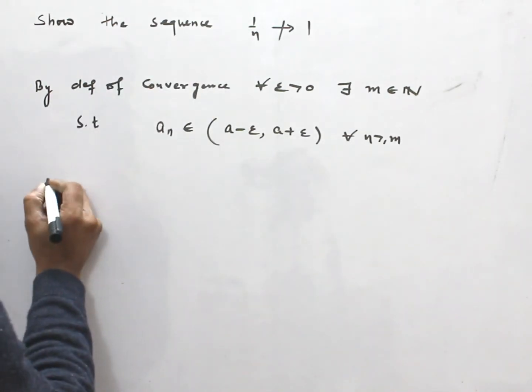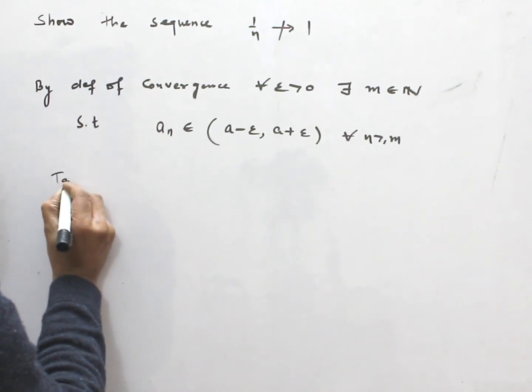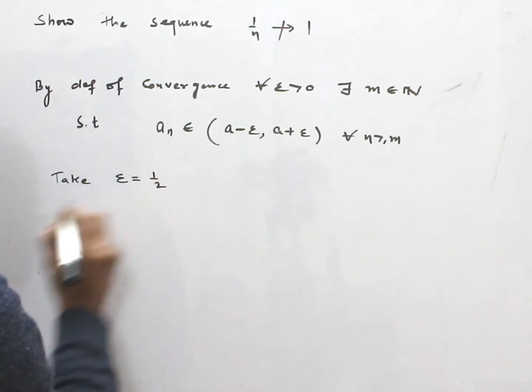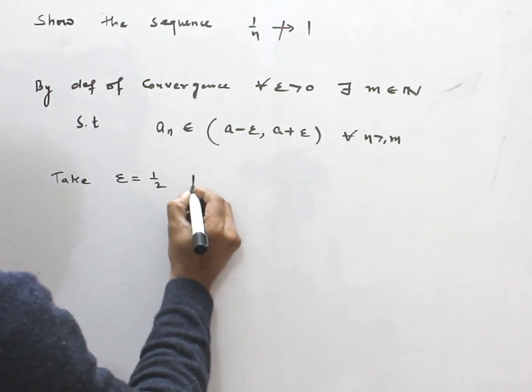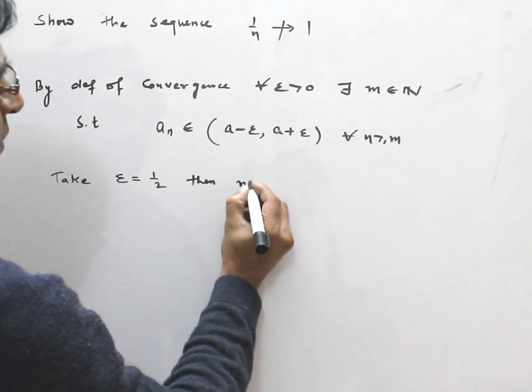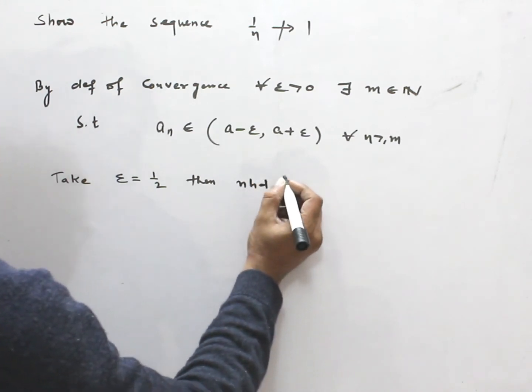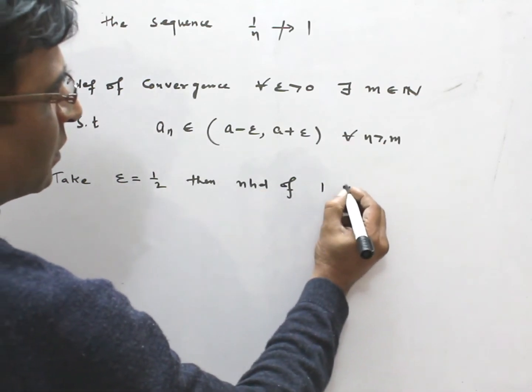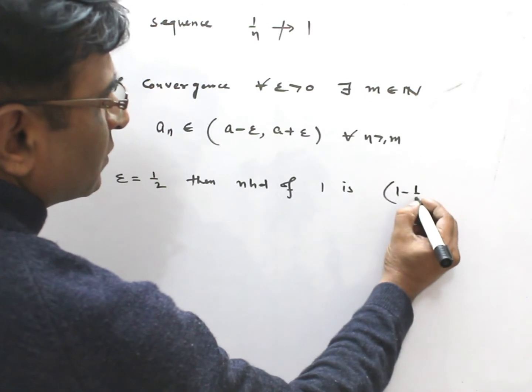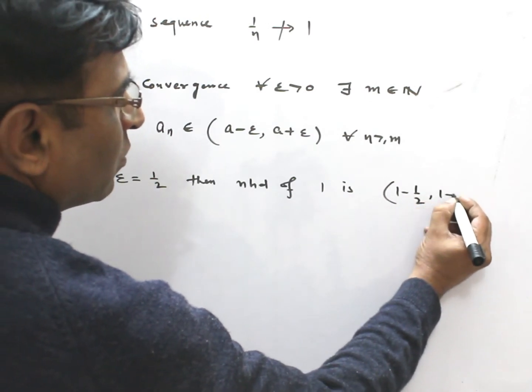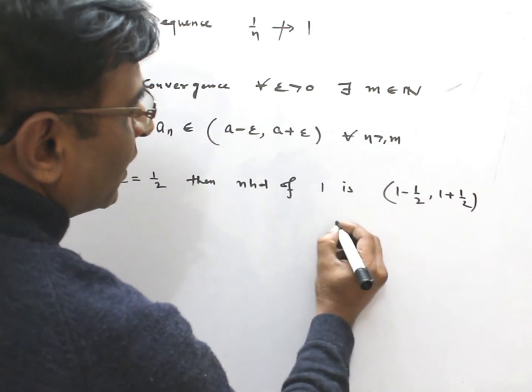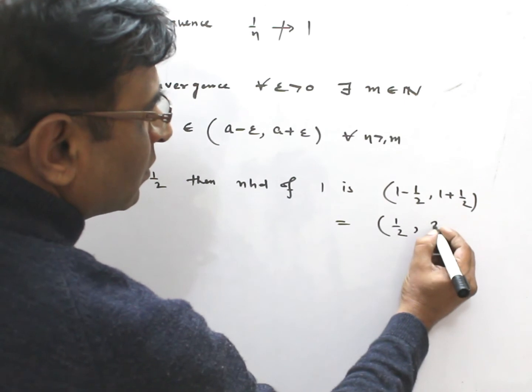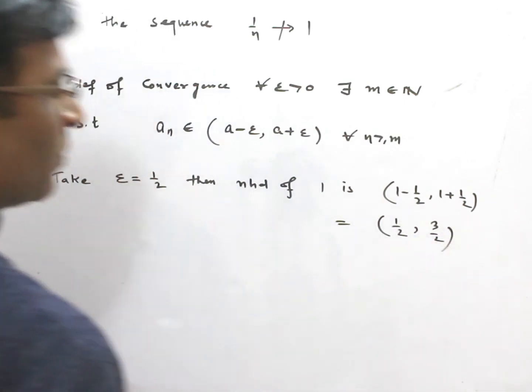if I take epsilon equal to 1/2, then the neighborhood of 1 is 1 minus 1/2, 1 plus 1/2, and this is equal to (1/2, 3/2). And,